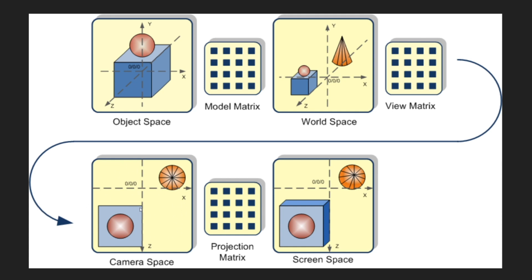So as you can see, this camera is able to see the top of the square, the top of the sphere, and then the top of the cone. And the last transformation is the projection matrix, and this actually gives it the perspective that makes it look like 3D. As you can see, this flat square can now be seen as the cube that it actually is, and this cone has a little bit of perspective as well.